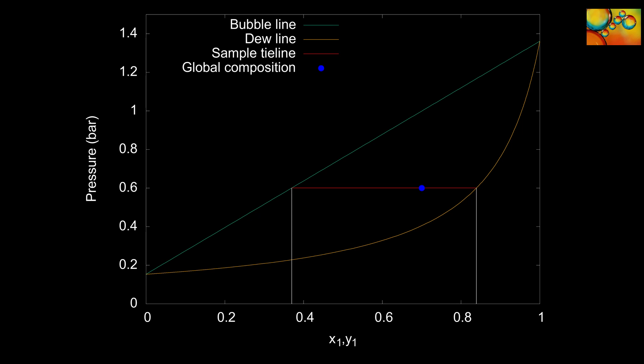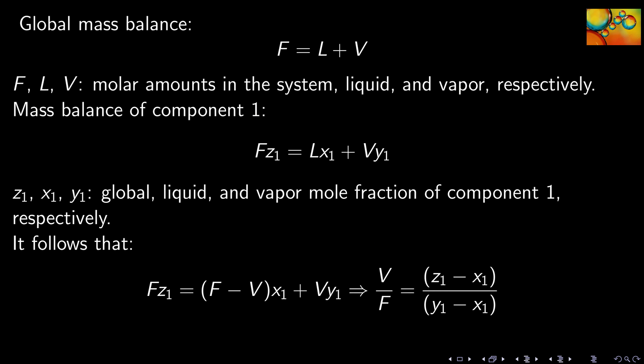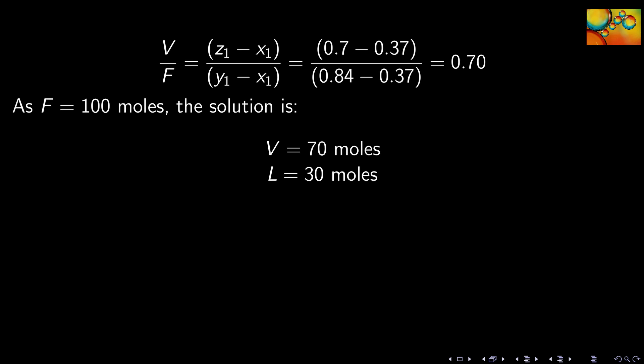To find the phase amounts, we need to use the mass balances. First, we do the global mass balance: F, the global amount, is equal to L plus V, the amounts in the liquid and vapor. We also write the mass balance for component one: F·z1 equals L·x1 plus V·y1. By combining these two equations, we obtain an expression for the ratio V over F that only depends on the phase compositions and the global composition. With the numbers of this problem, V over F is equal to 0.7. As the total amount is 100 moles, 70 moles will be in the vapor phase and 30 moles will be in the liquid phase.